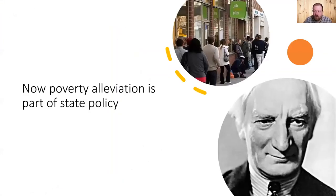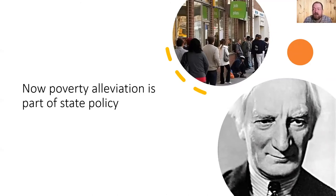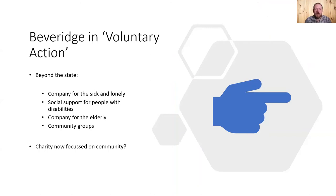To understand what charity is, you have to look at what the state does. The relief of poverty is a core charitable purpose, but the modern state goes a long way towards relieving poverty through welfare benefits, jobseeker's allowance, and the like. People don't necessarily have to rely on charity to survive anymore. That's a picture of William Beveridge, one of the architects of the welfare state — to understand modern charity, you have to go beyond the old cases.